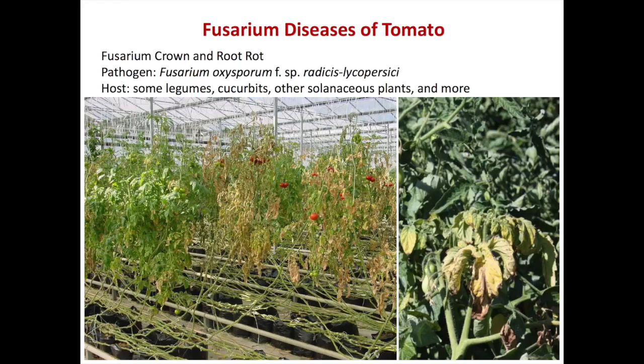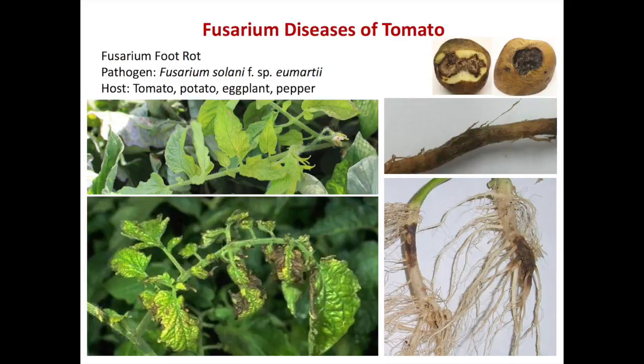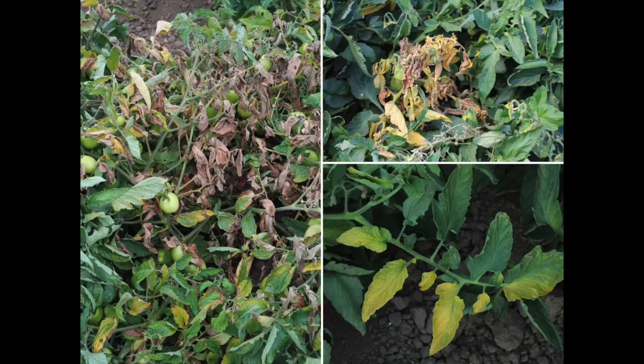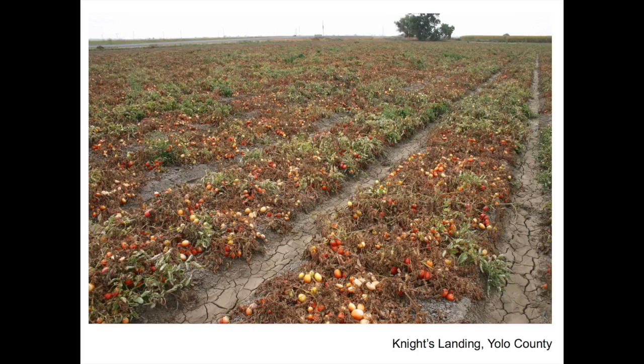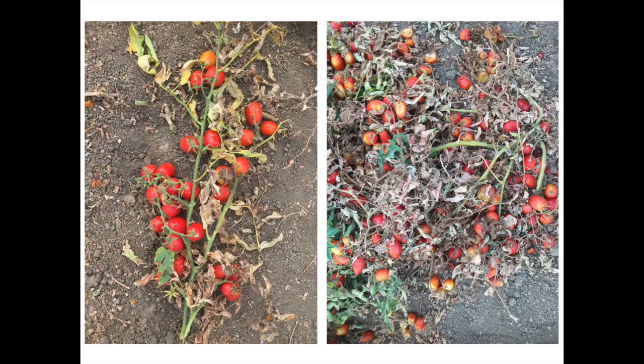I work on fusarium disease of tomato. There are a number of fusarium diseases that affect tomato: you have crown rot, crown root rot, foot rot, and fusarium wilt. The main point of this talk is to let the farmer and farm advisor know that there are a number of fusarium diseases, how to identify them based on symptom, and how we identify them in the lab molecularly and with different cultivars. The main point is fusarium disease is very devastating — once it gets into the field, it's established, and you cannot eradicate it.